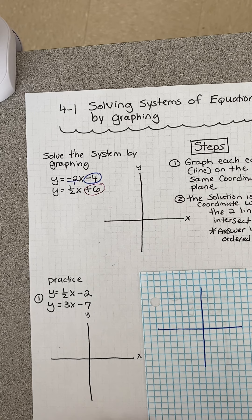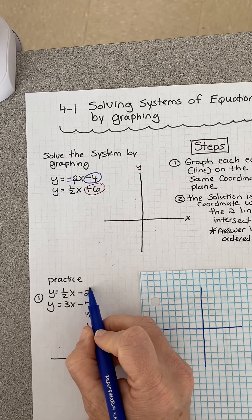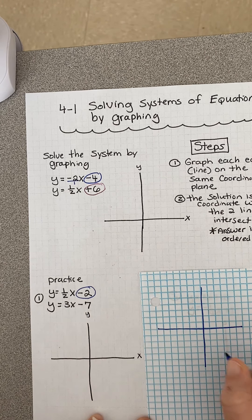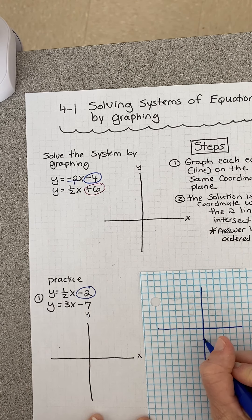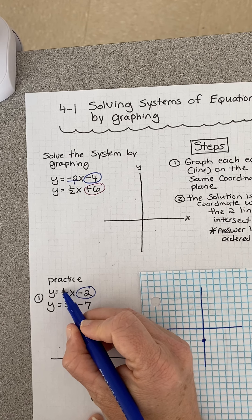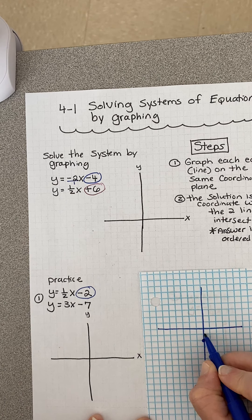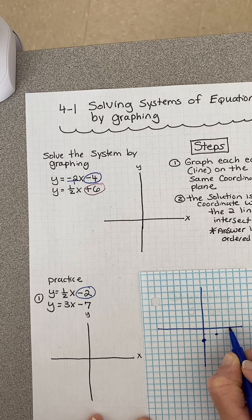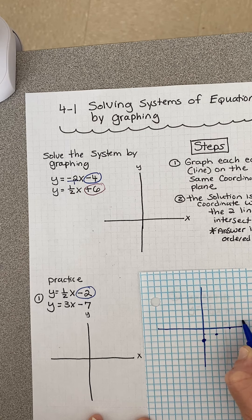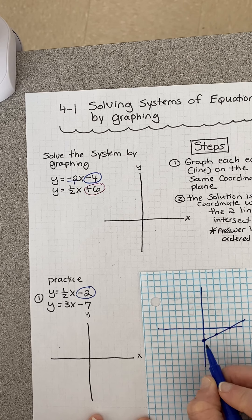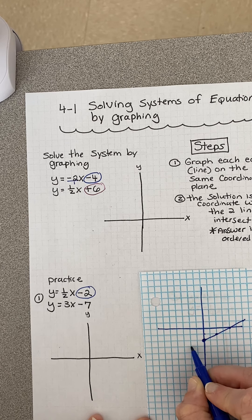We're going to graph both of these. Let's start with this one. The y-intercept is negative 2, and this is the slope - rise over run. I rise 1, run 2. Rise 1, run 2. Rise 1, run 2. And then I know it's going to go over here - down 1, back 2.